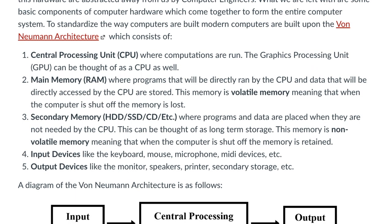There are a few common brands of processors nowadays, and those are Intel and AMD. The graphics processing unit, also known as the GPU or a graphics card, can also be thought of as a CPU — just a type of CPU that is more specialized to run graphical computations. The common brands of GPUs are NVIDIA and AMD Radeon.